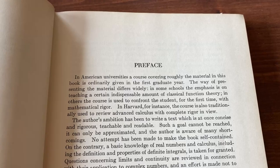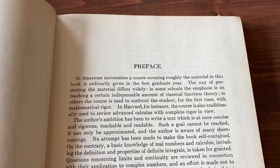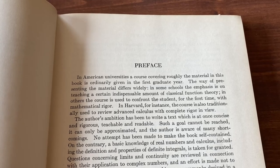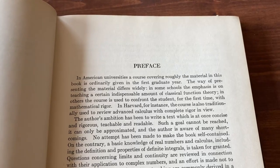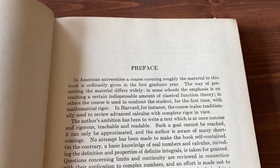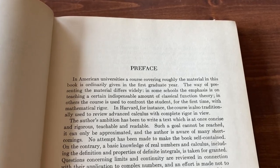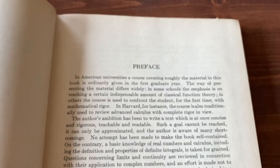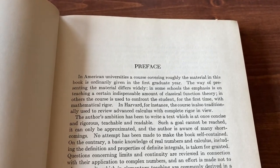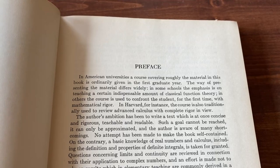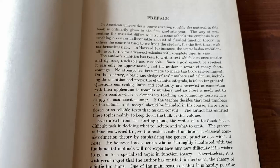Let's read part of the preface. In American universities, a course covering roughly the material in this book is ordinarily given in the first graduate year. So this book is intended for graduate students. That is the purpose of this book. The way of presenting the material differs widely. In some schools, the emphasis is on teaching a certain indispensable amount of classical function theory. In others, the course is used to confront the student for the first time with mathematical rigor. It goes on and talks more about the book.